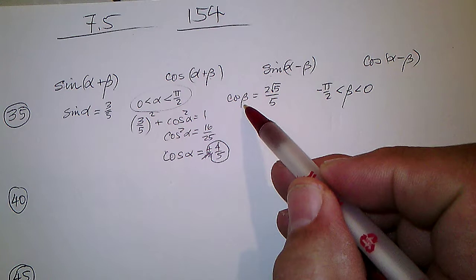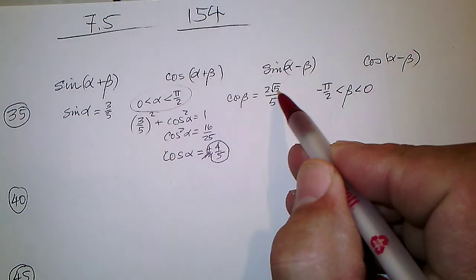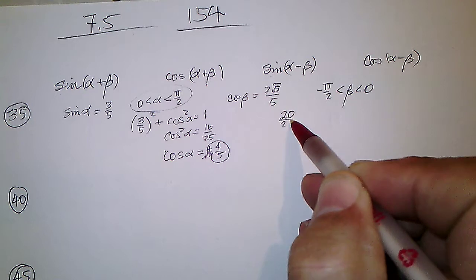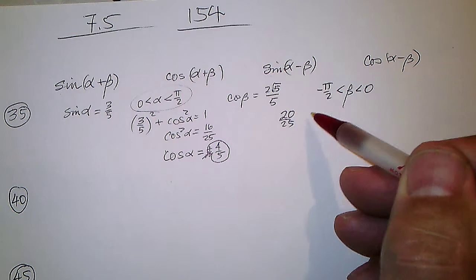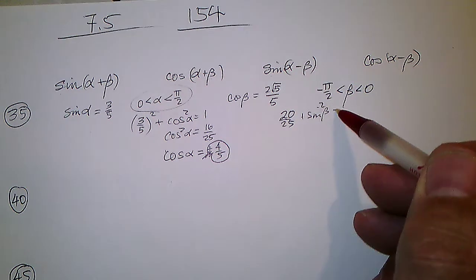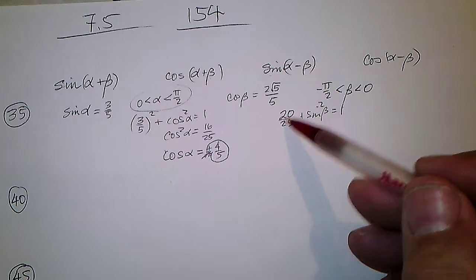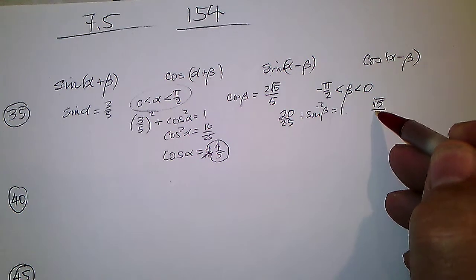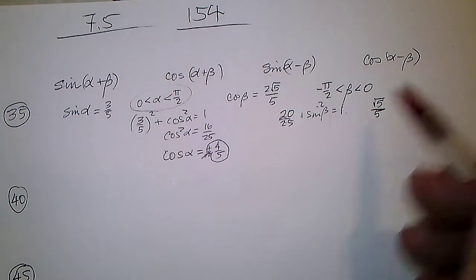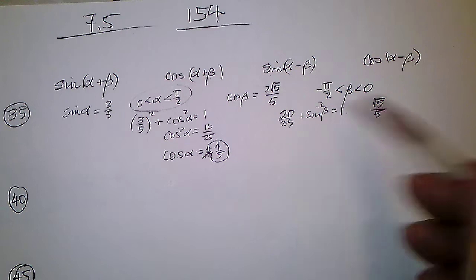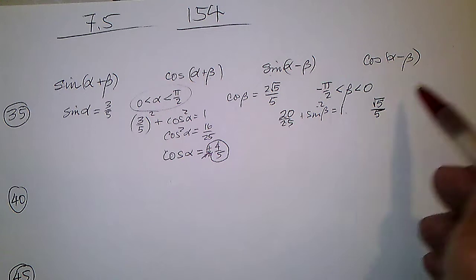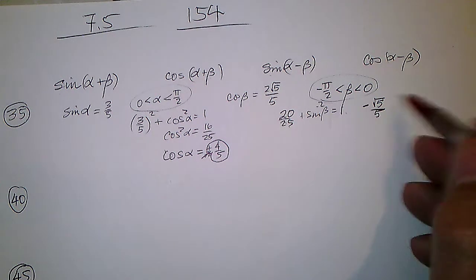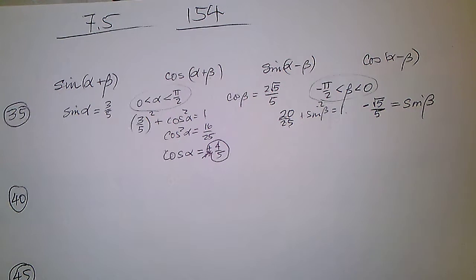We also need beta. If cosine of beta is 2√5 over 5, squaring that gives 4 times 5 over 25, which is 20 over 25. So cosine squared plus sine squared of beta equals 1. That means 25 minus 20 twenty-fifths is 5 twenty-fifths, so sine of beta is the square root of 5 over 5. Since we're in the fourth quadrant, sine of beta is negative.